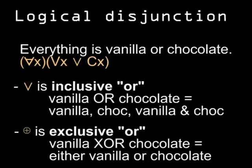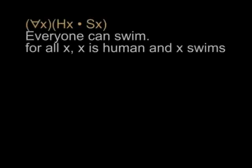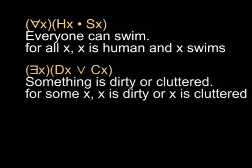These ANDs and ORs bring up the topic of the scope of a quantifier. Look at what happens when two predicates are in a quantifier's scope — it applies to both of them. 'For all x, x is human and x can swim' just means everybody can swim. 'For some x, x is dirty or x is cluttered' means something is dirty or cluttered, or both dirty and cluttered.